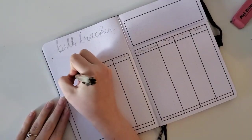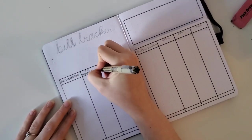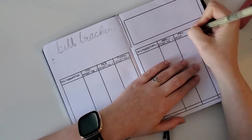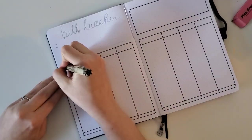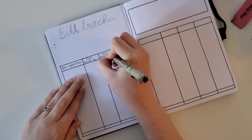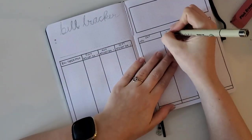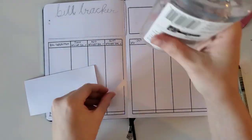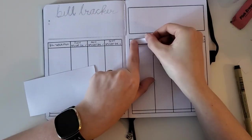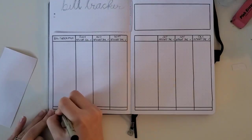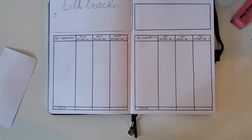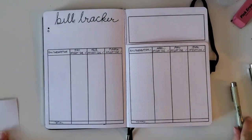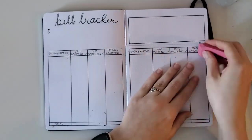I definitely copied this setup from somebody else so I will link their video in the description if I can find it. But this way you can also see if there's any unnecessary things that your money is going to and decide what to prioritize. You can see what subscriptions happen monthly or yearly and keep track of all your bills.